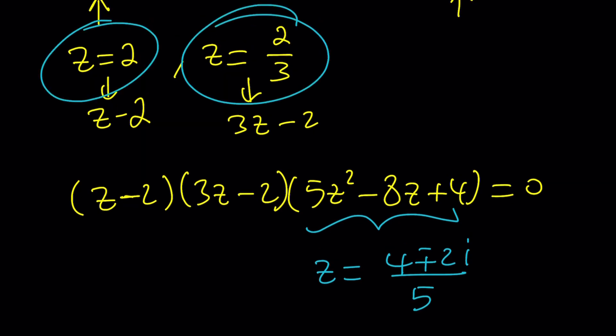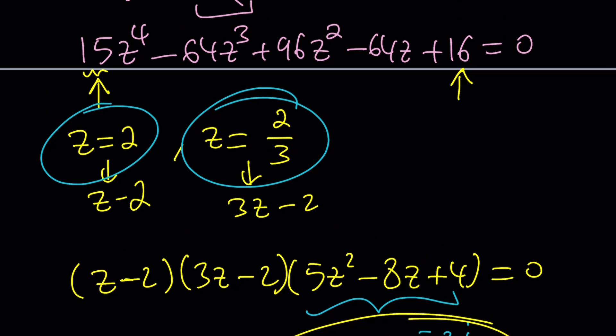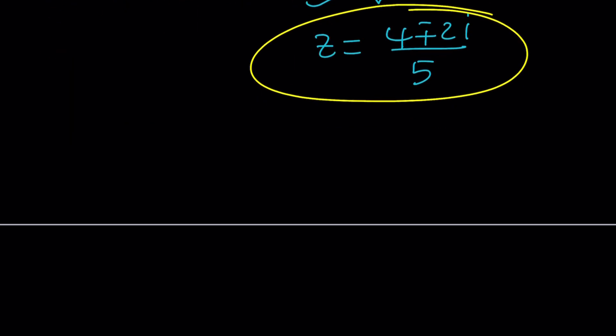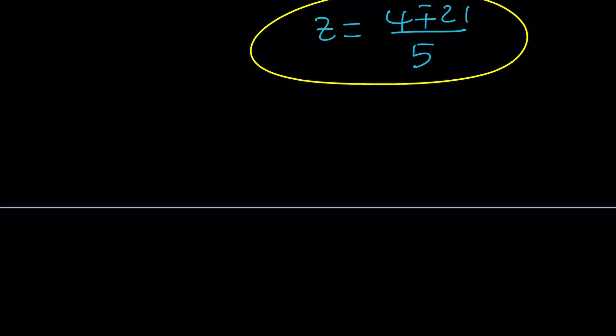So we got four solutions, which make sense for a quartic equation. That was the goal to solve for all Z values. That's the first method. I hope this makes sense. Expand it and find some possible solutions, candidates, and then factor using them. You can use polynomial division, other methods, so on and so forth. Let's take a look at the second method.